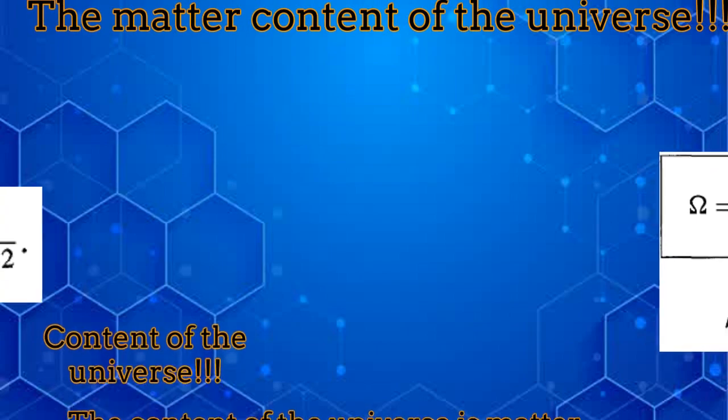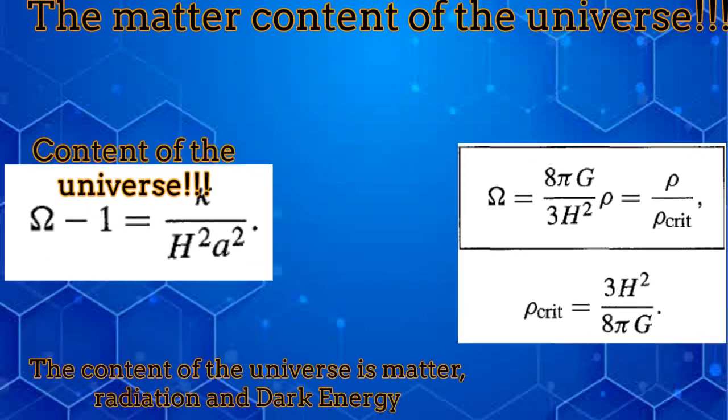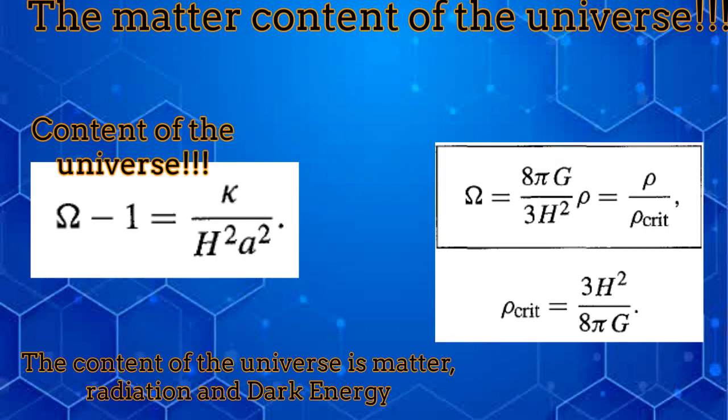If we consider the critical energy density as a function of the Hubble parameter, as it appears on the screen, then we can simplify one of the Friedman equations. The resulting equation helps to analyze the content of the universe. The content of the universe is divided in matter, radiation and vacuum energy. The contributions due to the spatial curvature appear on the right-hand side of the same equation.